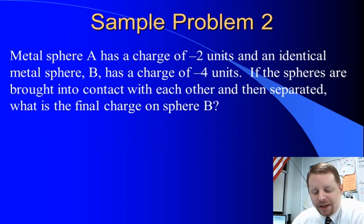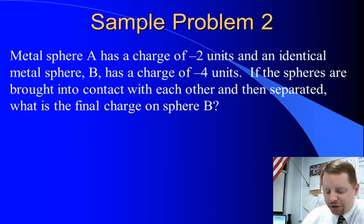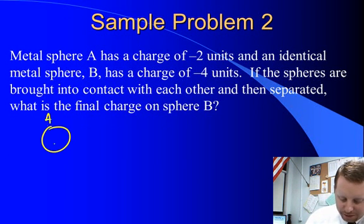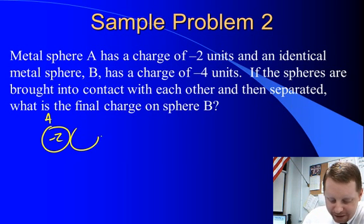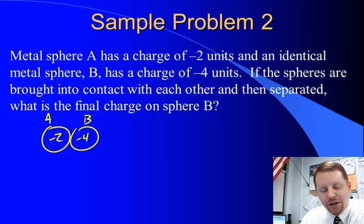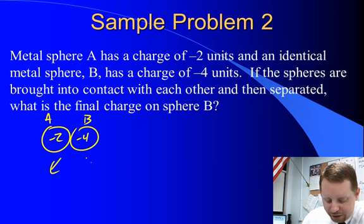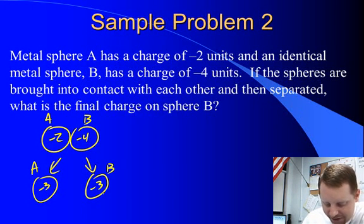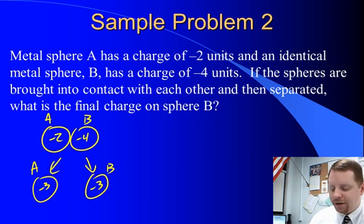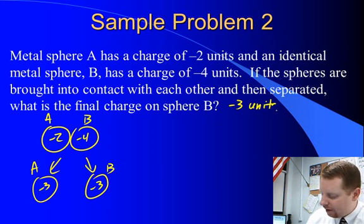Another sample problem: metal sphere A has a charge of negative two units and identical metal sphere B has a charge of negative four units. When brought into contact, they share a total of negative six, so when split apart, A has negative three and B has negative three. The final charge on sphere B will be negative three units.